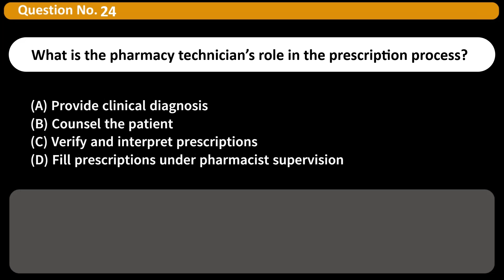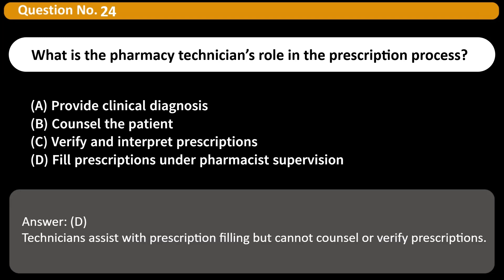What is the pharmacy technician's role in the prescription process? A. Provide clinical diagnosis. B. Counsel the patient. C. Verify and interpret prescriptions. D. Fill prescriptions under pharmacist supervision. Answer: D. Technicians assist with prescription filling but cannot counsel or verify prescriptions.